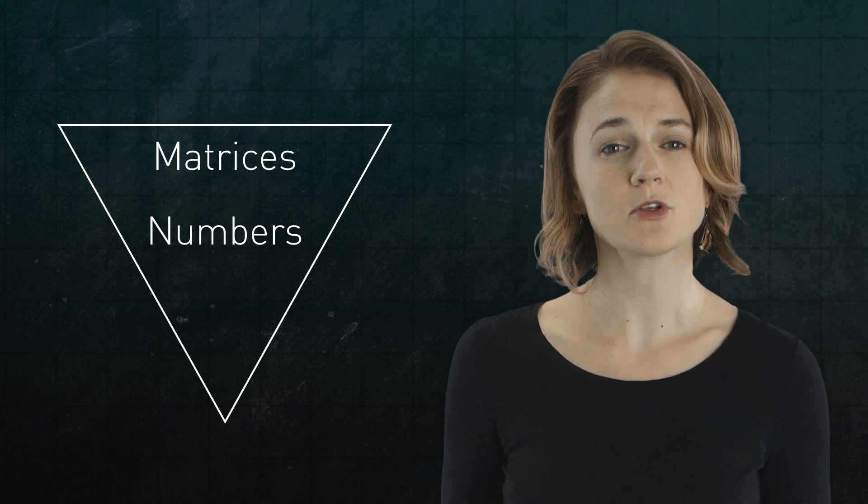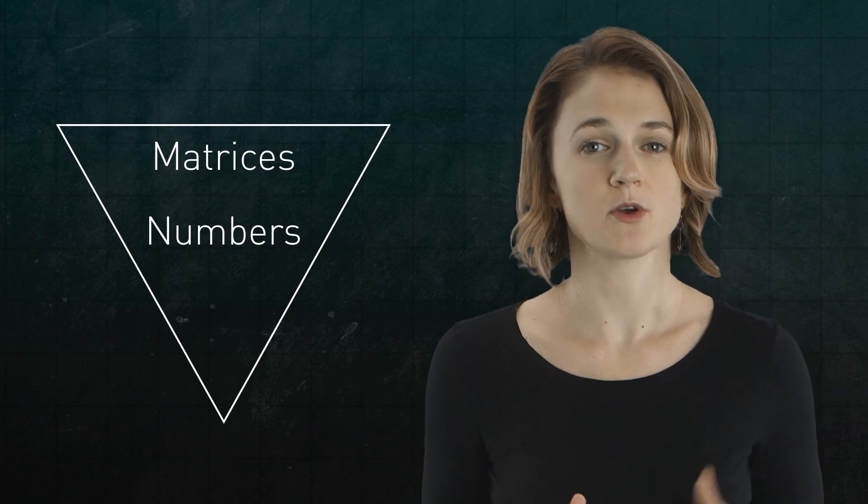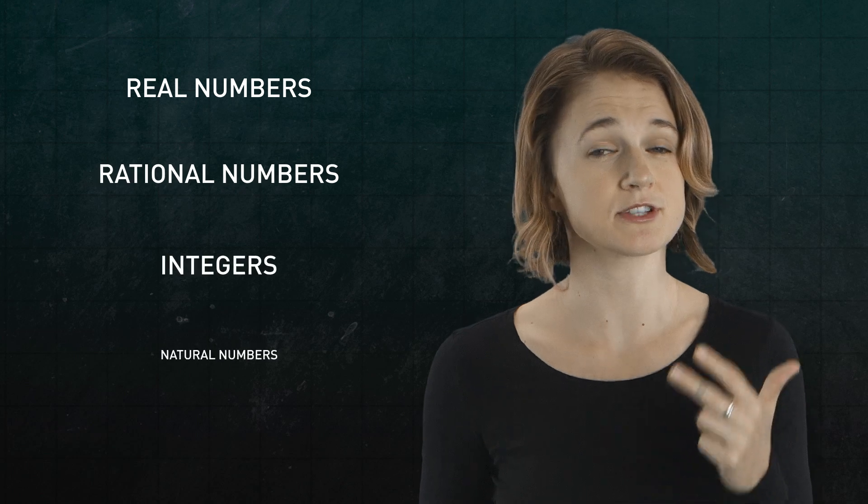Let's pick, as a concrete example, four different types of numbers: real numbers, rational numbers, integers, and natural numbers.